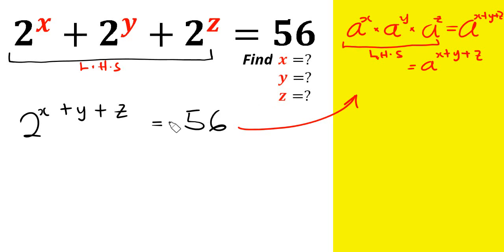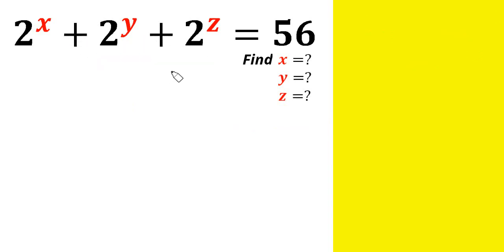Invariably, we cannot apply this basic index rule here — it can only work when we have multiplication signs between the variables. Also, somebody might think to factor out a common term, but if you look critically, we don't even have any common term here. So bringing out a common factor is also not going to work.